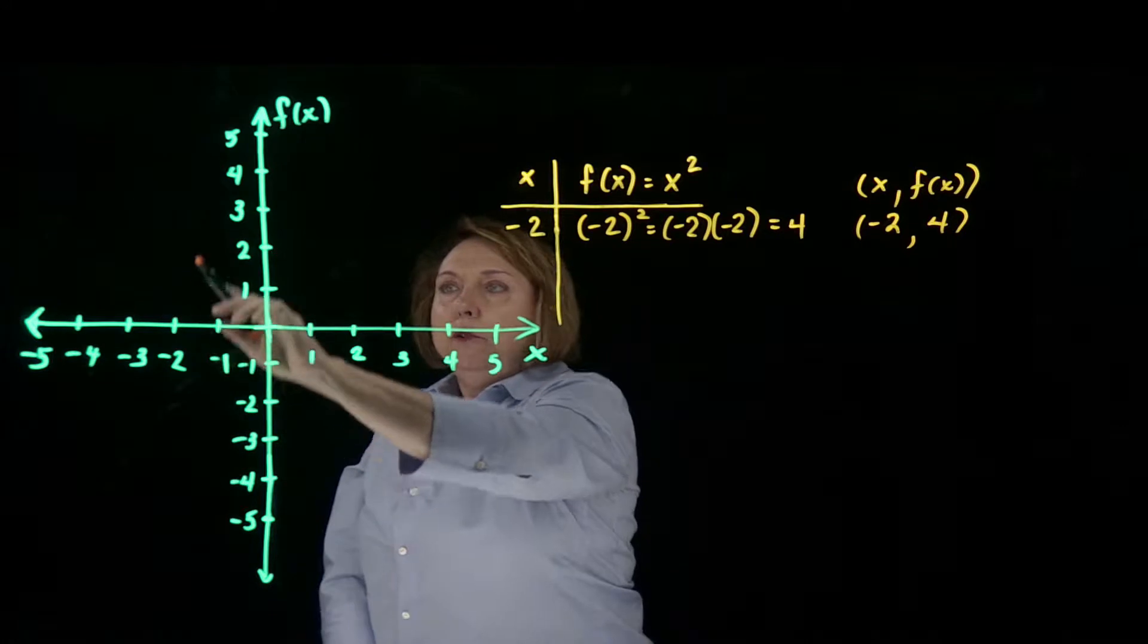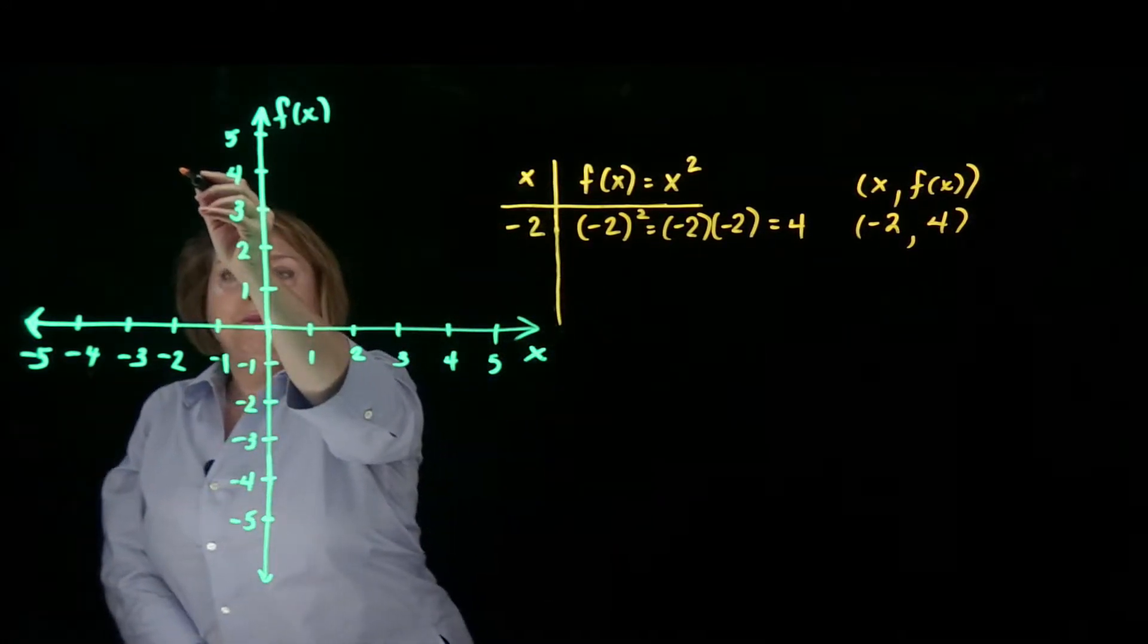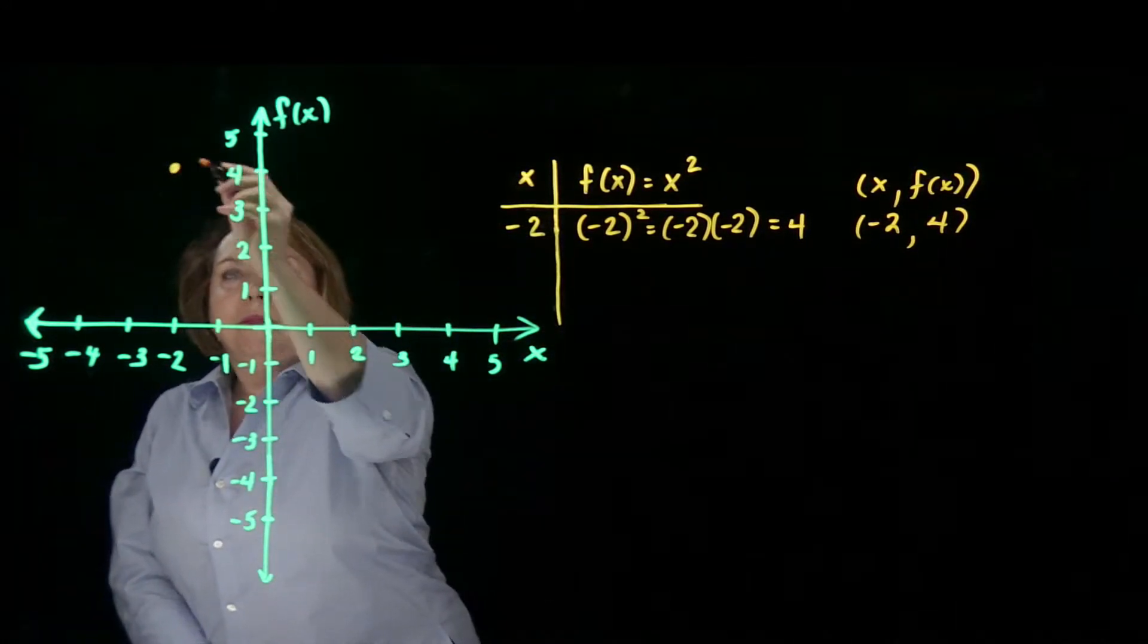x is negative 2, y or f of x is 4, right there.